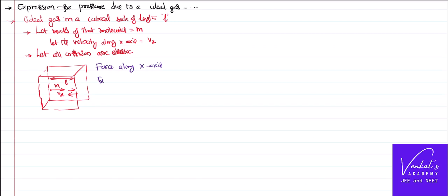The force due to that gas molecule along the x-axis, Fx, equals the change in momentum along x with respect to time. The change in momentum is: momentum final = MVx, minus momentum initial = M(-Vx), because the molecule moves in the opposite direction after the elastic collision, so it returns with the same speed Vx.